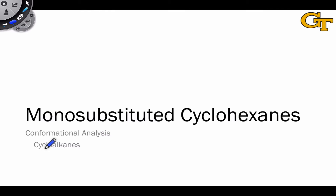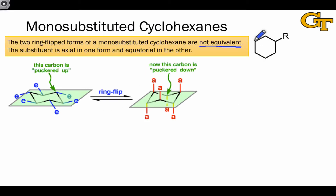Now that we've examined the ring flip process in detail, let's look at what happens when we replace one of the hydrogens in parent cyclohexane with a substituent. This leads to a mono or singly substituted cyclohexane ring with some interesting properties. By mono-substituted, we mean that we've replaced one of the 12 hydrogens in the cyclohexane ring with an R group, where R is some group that we call the substituent.